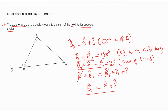We have proved that angle B2 is equal to angle A plus angle C. Remember that the exterior angle of a triangle is equal to the sum of the two interior opposite angles. Don't forget the reason.